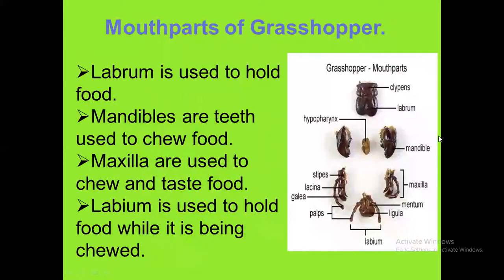Now, mouth parts of grasshoppers. The mouth parts consist of five parts: labrum, labium, mandible, maxilla, and hypopharynx. Labrum is the upper lip of the mouth, covers the oral cavity, and helps to keep the mouth shut.